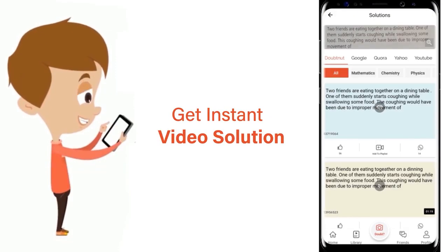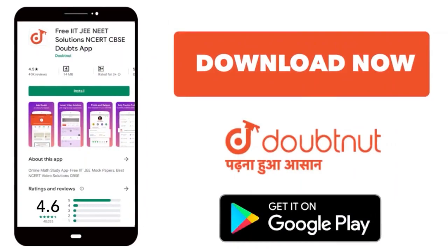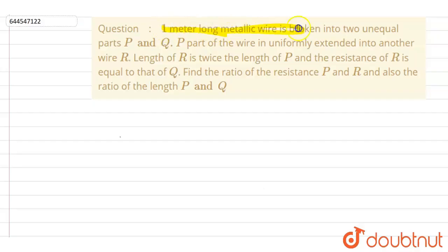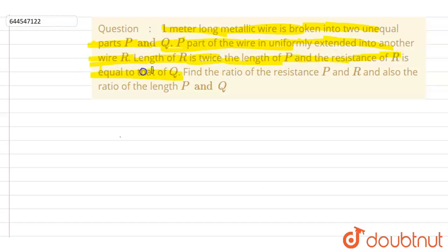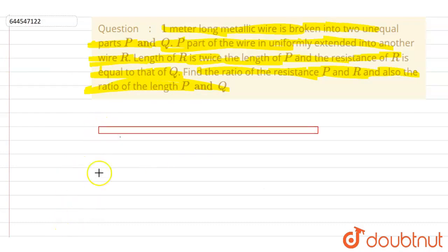Hello everyone. A one-meter long metallic wire is broken into two unequal parts P and Q. The P part of the wire is uniformly extended into another wire R. The length of R is twice the length of P, and the resistance of R is equal to that of Q. Find the ratio of resistance of P and R, and also the ratio of the length of the two parts.